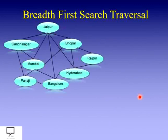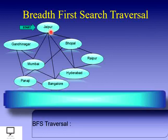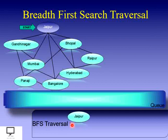Now let's start the traversal for the given graph; we are going to start from Jaipur. First we use a queue data structure and initially insert the starting vertex — Jaipur — as the arbitrary vertex. Mark it as visited, then delete from the front end of the queue and display it in the BFS traversal. Now let's find all adjacent and unvisited vertices.